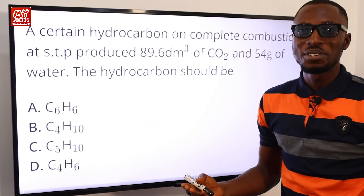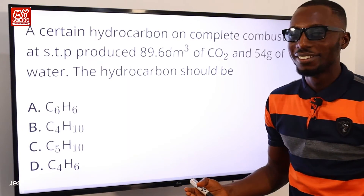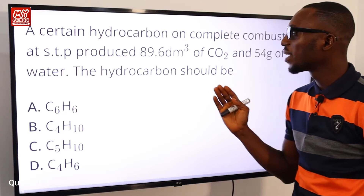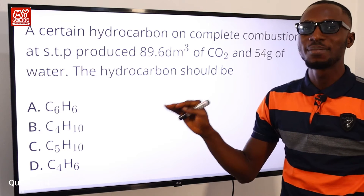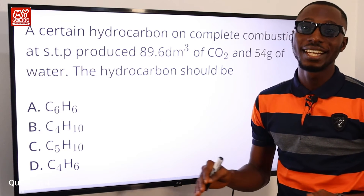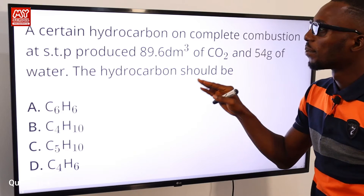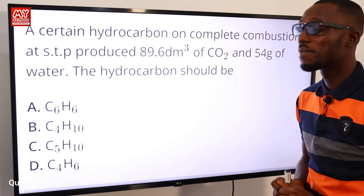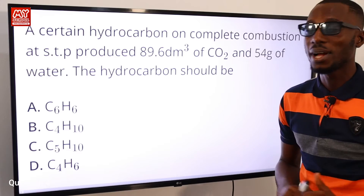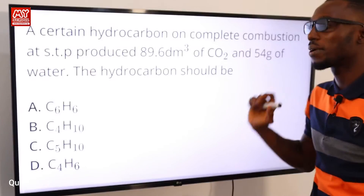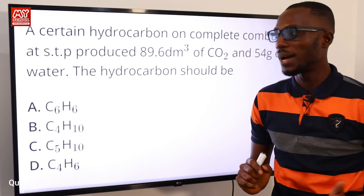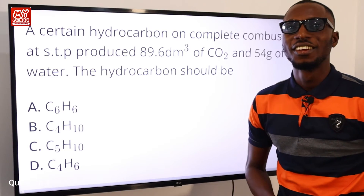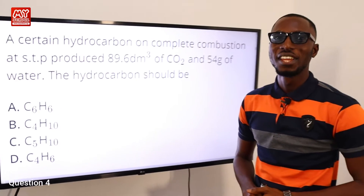Question four: a certain hydrocarbon on complete combustion at STP (standard temperature and pressure) produced 89.6 dm³ of CO₂ and 54 g of water. What is the hydrocarbon?